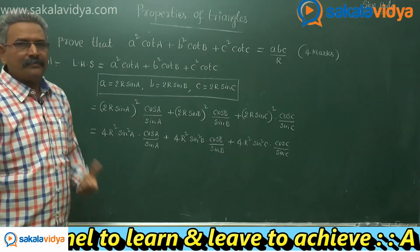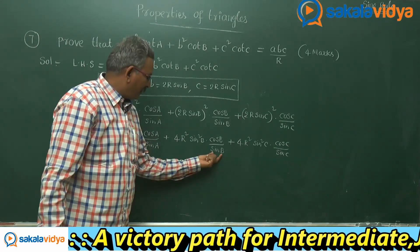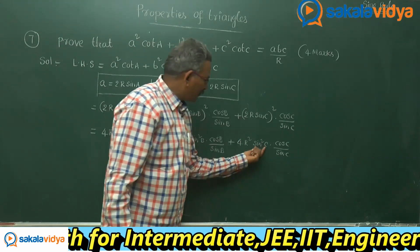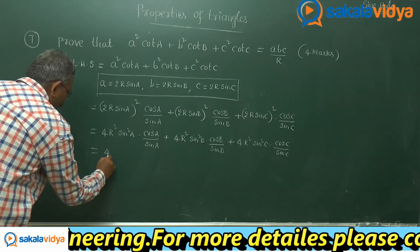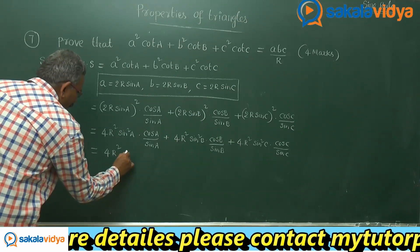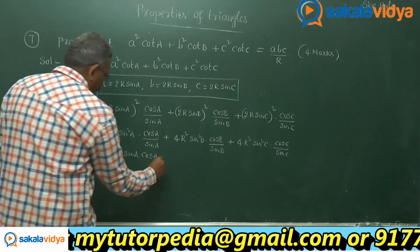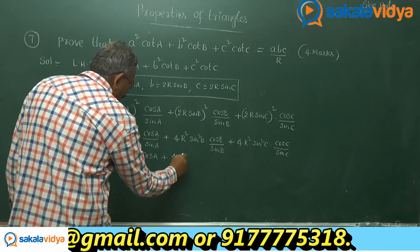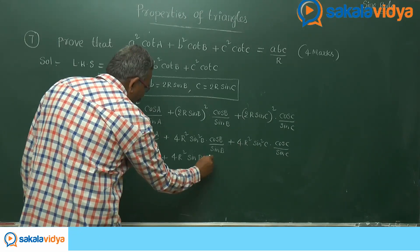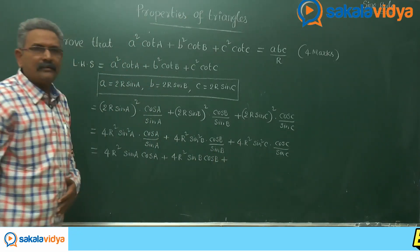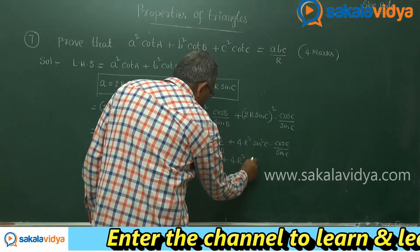Now sin²A / sin A simplifies to sin A, similarly sin²B / sin B gives sin B, and sin²C / sin C gives sin C. So the next step gives 4R² sin A cos A + 4R² sin B cos B + 4R² sin C cos C.